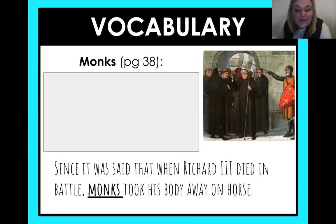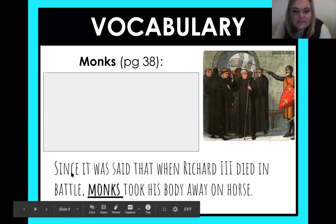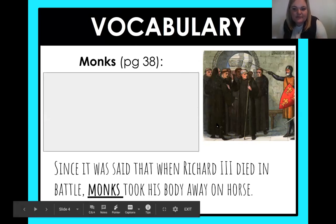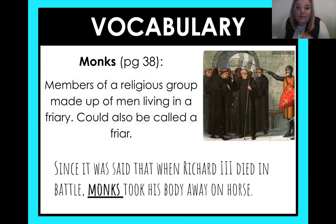Vocabulary. Today we are learning about monks. A monk — so over here I have this old picture, an old painting about the time when the story takes place, what the monks would look like. Since it was said that when Richard III died in battle, monks took his body away on a horse. What could monks mean? Monks are actually members of a religious group made up of men living in a friary. These monks could also be called friars — they all live together and they're a religious group.